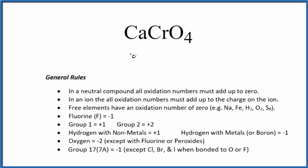To find the oxidation number for each element in CaCrO4, we'll use these rules. First off, there's no negative or positive sign after this compound, so it's a neutral compound. All the oxidation numbers are going to add up to zero.